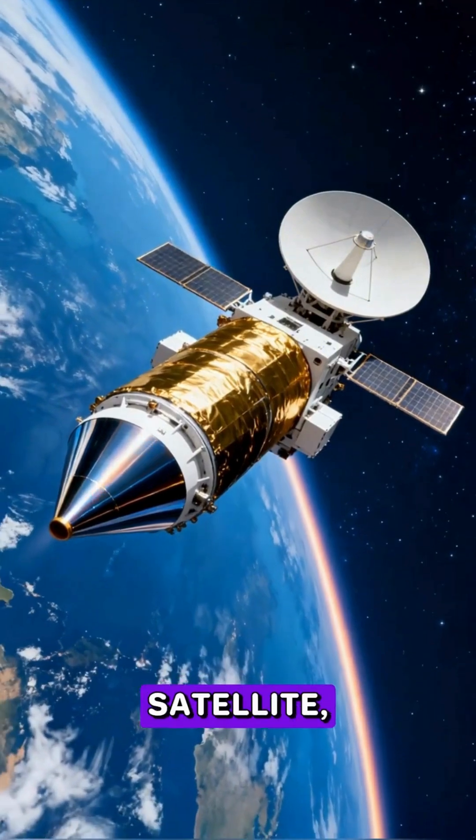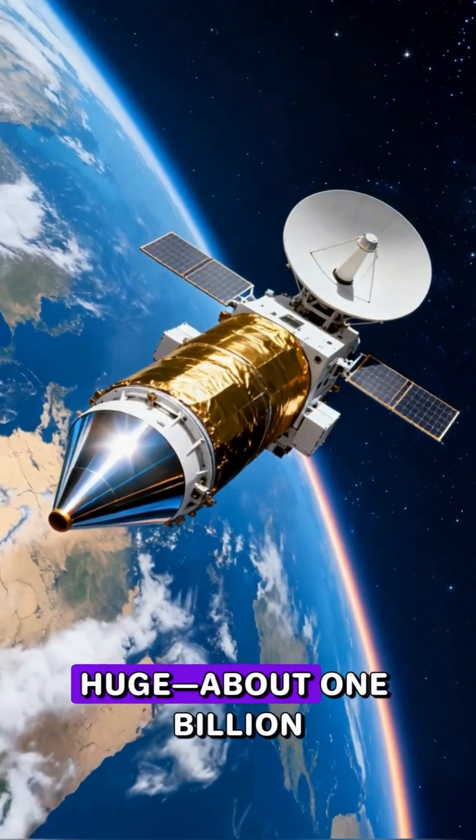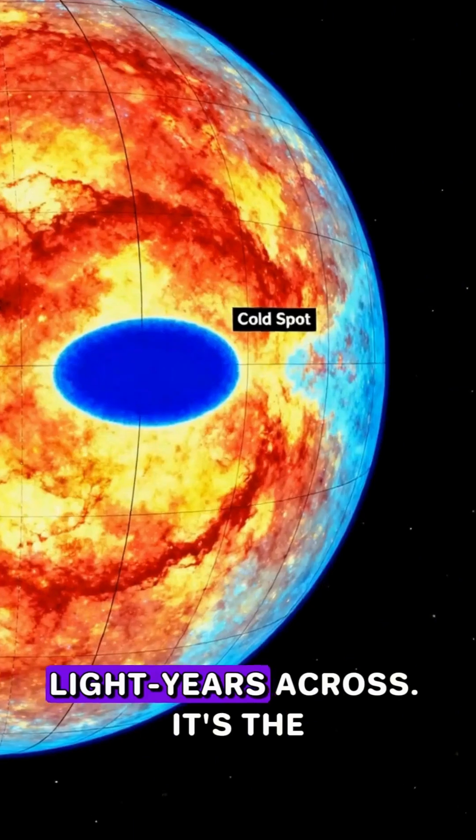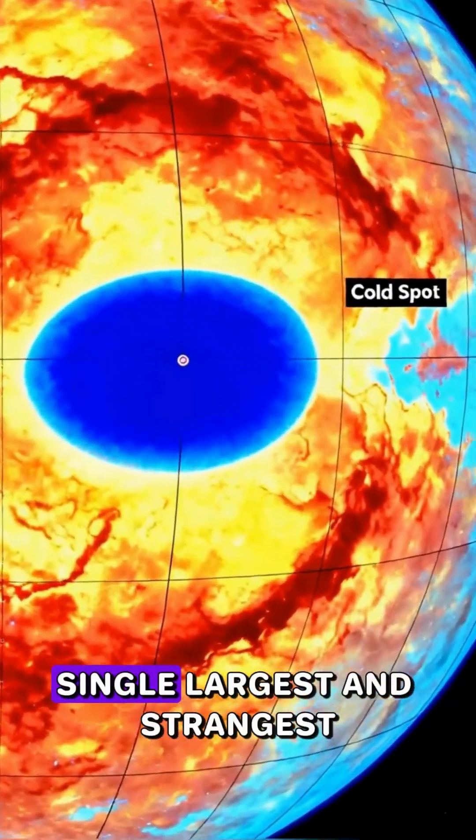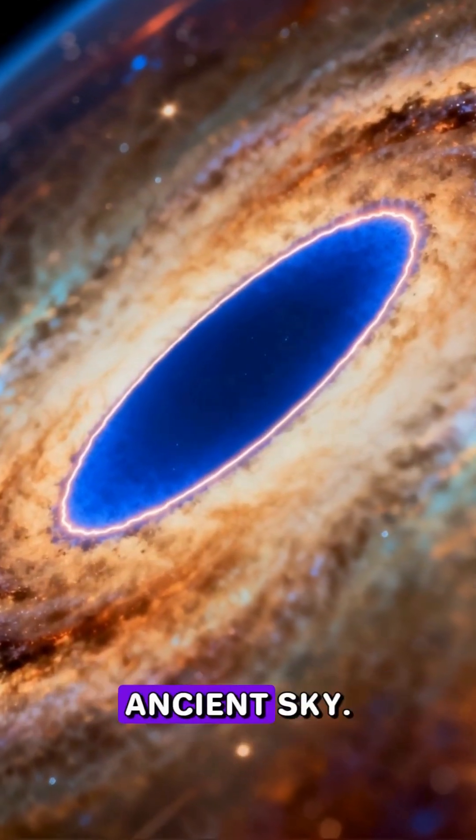Discovered by the Planck satellite, this region is ridiculously huge. About 1 billion light years across. It's the single largest and strangest feature ever found in the ancient sky.